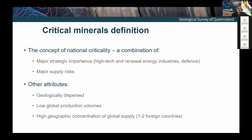There are different definitions around the world, but basically the concept is based on a combination of two major factors: the strategic importance of a particular commodity — historically for defense, but also for high-tech and renewable energy industries — and major supply risks. Other attributes are both geological and economic: these commodities tend to be geologically dispersed, many don't form large accumulations in their own right, they're characterized by low global production volumes, and there is often high geographic concentration of global supply to one or two countries.